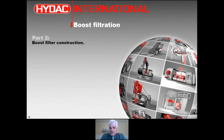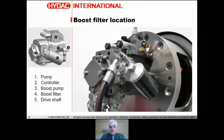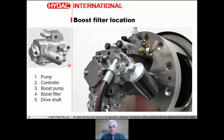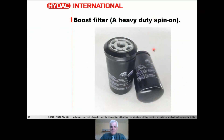Here are some application photos to help you identify what a boost filter looks like. This is a closed loop transmission pump. You can see a spin-on filter on the side — that is the boost filter. It's an intrinsic part of the transmission in this case. The spin-on filter used here is specialized; it has very thick material all the way around because a typical return filtration spin-on is not rated to the required pressure.